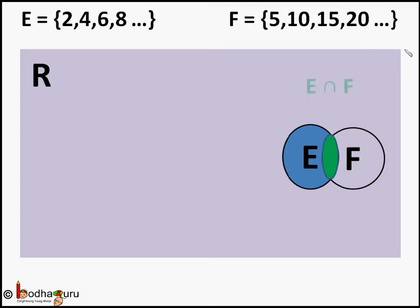We know E intersection F set has those numbers which are even and also multiples of 5, that is the area given in green.